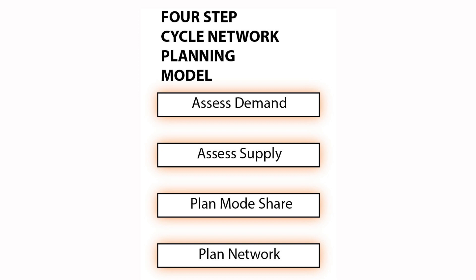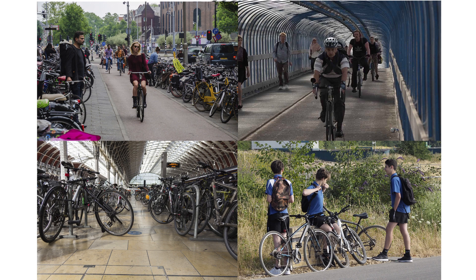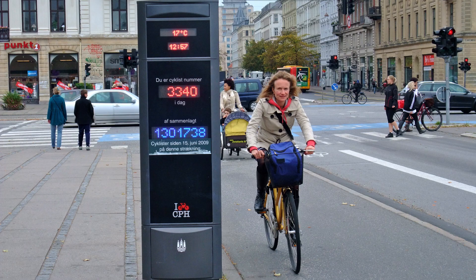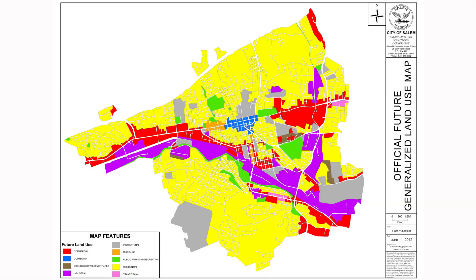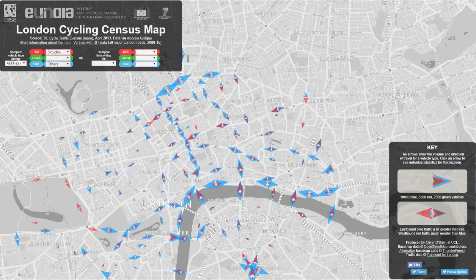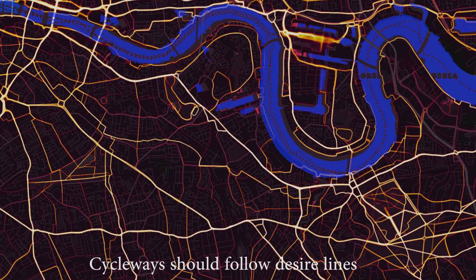The first step deals with the existing potential demand for cycle infrastructure for a range of purposes, including journeys to work, to school, to stations, to the shops, and to leisure attractions. This information can come from traffic counts, land use maps, census data, and cycling apps like Strava.